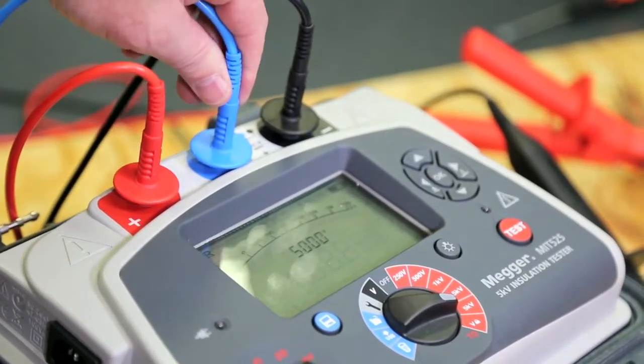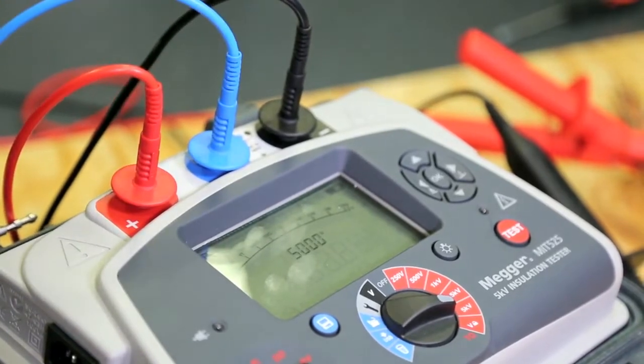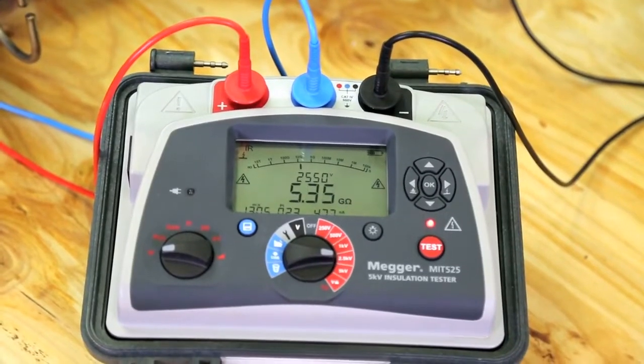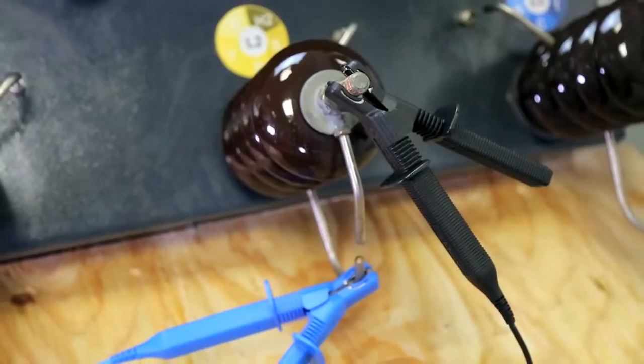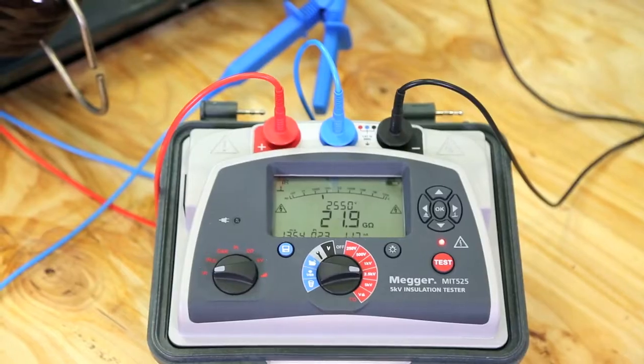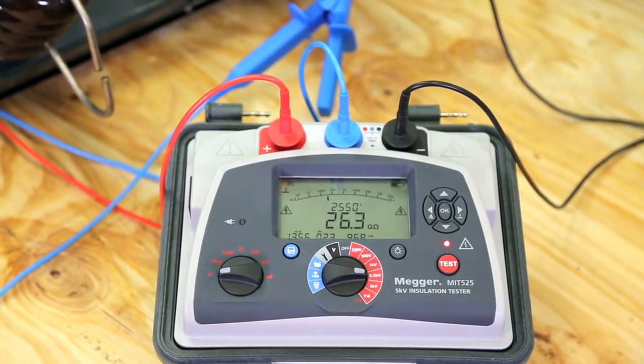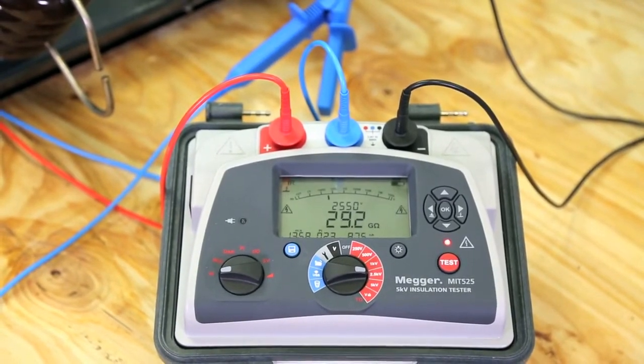The guard terminal ensures you measure the insulation that you want to measure. It measures and discounts any surface leakage current. It is key to the accuracy of the insulation test. That's why Mega's guard terminal performance is specified and offers unmatched accuracy.